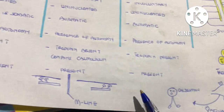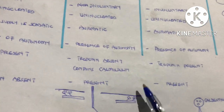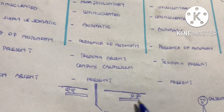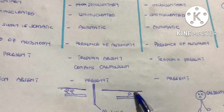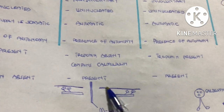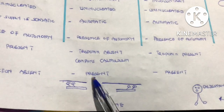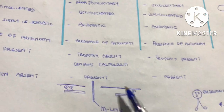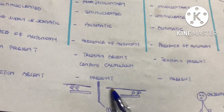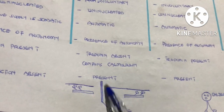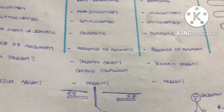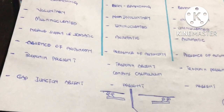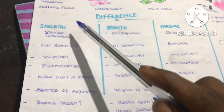This exposes the myosin binding sites for the myosin head to bind to, causing the sliding effect. The sliding effect is due to the thick filament (myosin) pulling the thin filament towards the M-line, which leads to contraction.